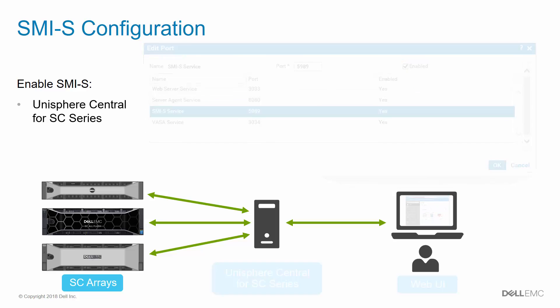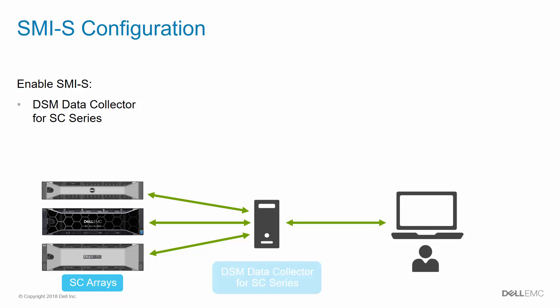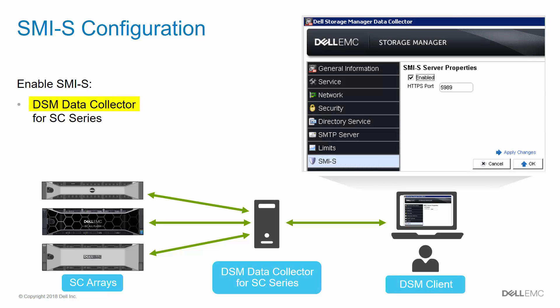If you are using the DSM Data Collector, log in to the Data Collector console, and under the SMIS tab on the left, check the Enabled box for SMIS server properties, click Apply Changes, and then OK.